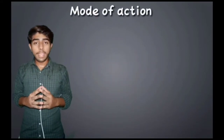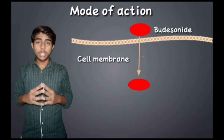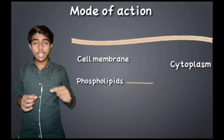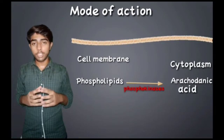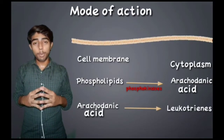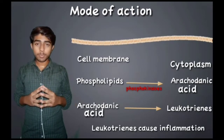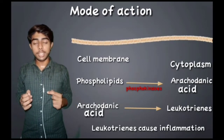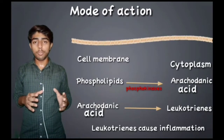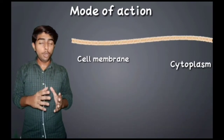Now we will see the mode of action of Budesonide. Budesonide is a highly lipophilic drug and it can easily cross the cell membrane. When inflammatory response approaches, phospholipids are converted into arachidonic acid with the help of phosphokinase enzyme. That arachidonic acid is further converted into leukotrienes via the lipoxygenase pathway, and these leukotrienes are very important in causing inflammation. When we take Budesonide, it inhibits the phosphokinase enzyme. As this enzyme is inhibited, there will be no production of arachidonic acid from phospholipids and no production of leukotrienes. As a result, there will be no inflammation.